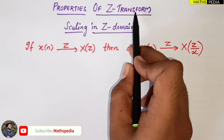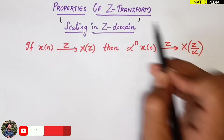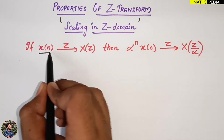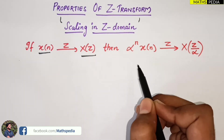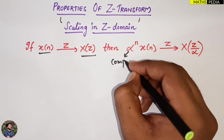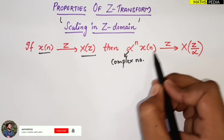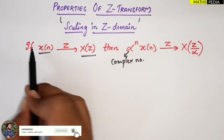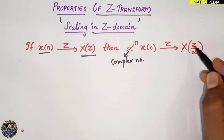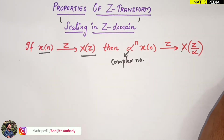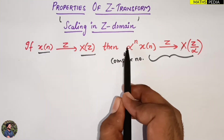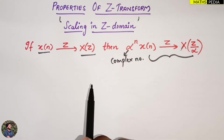In this video we will be discussing the scaling in Z-domain property of the Z-transform. The definition is: if x(n) is a signal whose Z-transform is X(z), then alpha^n multiplied by x(n) — where alpha is a complex number — has the Z-transform X(z/alpha). This is what we have to prove.